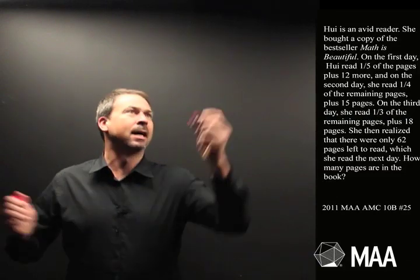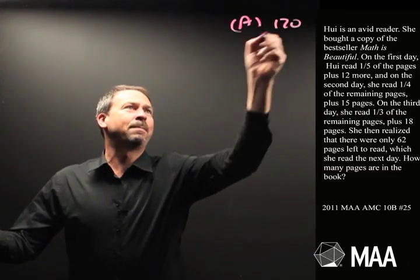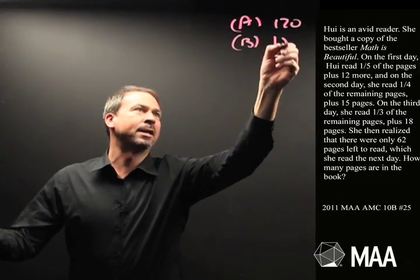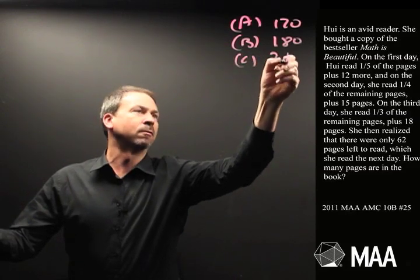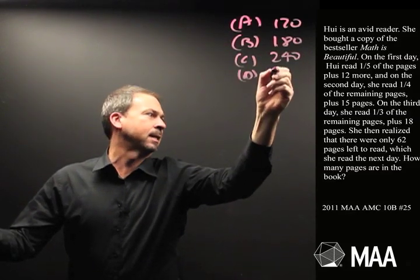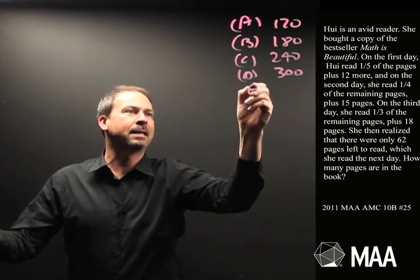And I guess we've got five options. Option A is 120 pages, B is 180, C is 240. Looks like they're going by 60. 300 for D, yep, and E is 360.